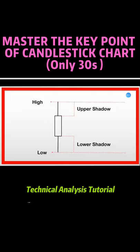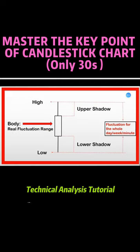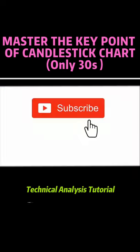The line below the body is called the lower shadow. From the structure of a candlestick, the body represents the real fluctuation range, and the length between the high and low price shows the fluctuation for the whole day.